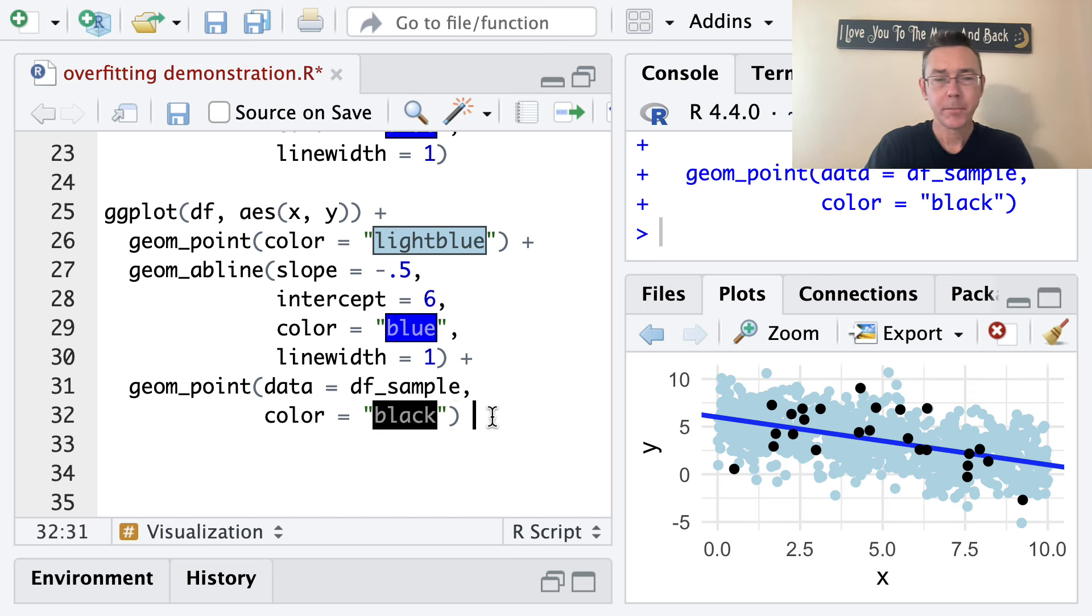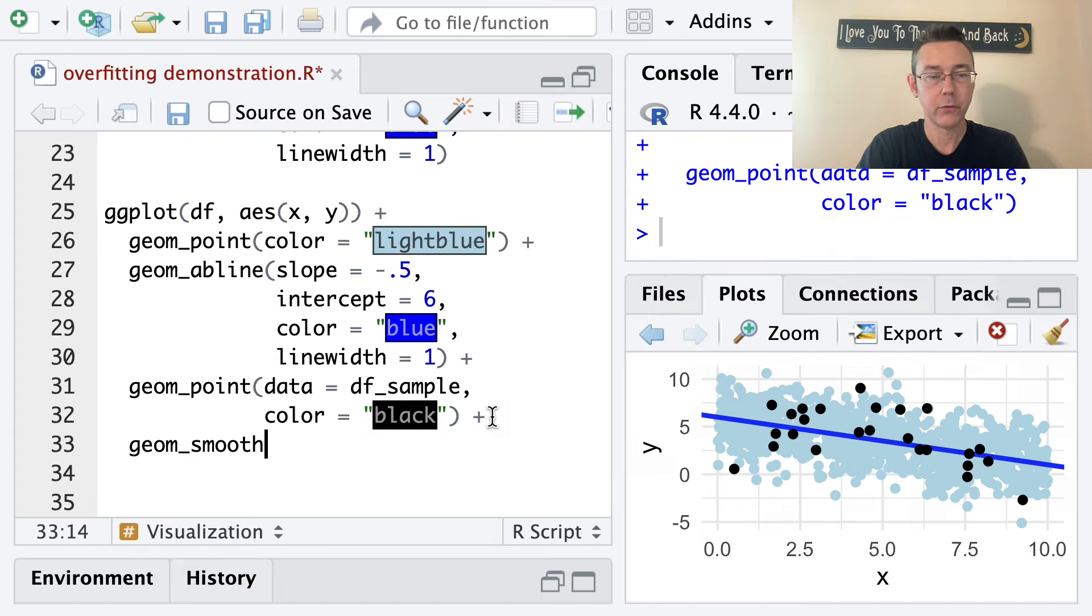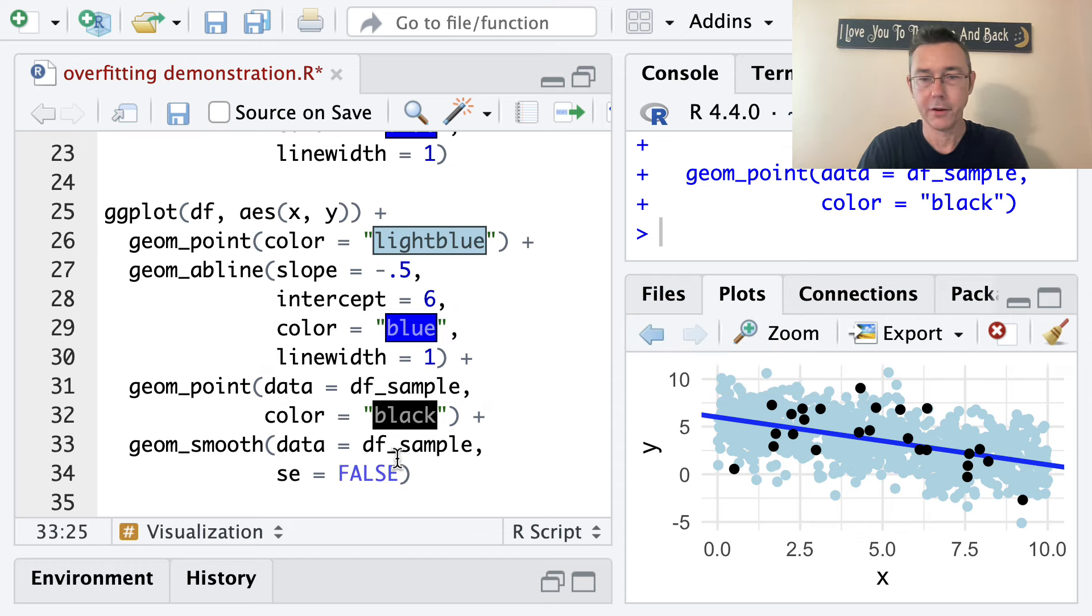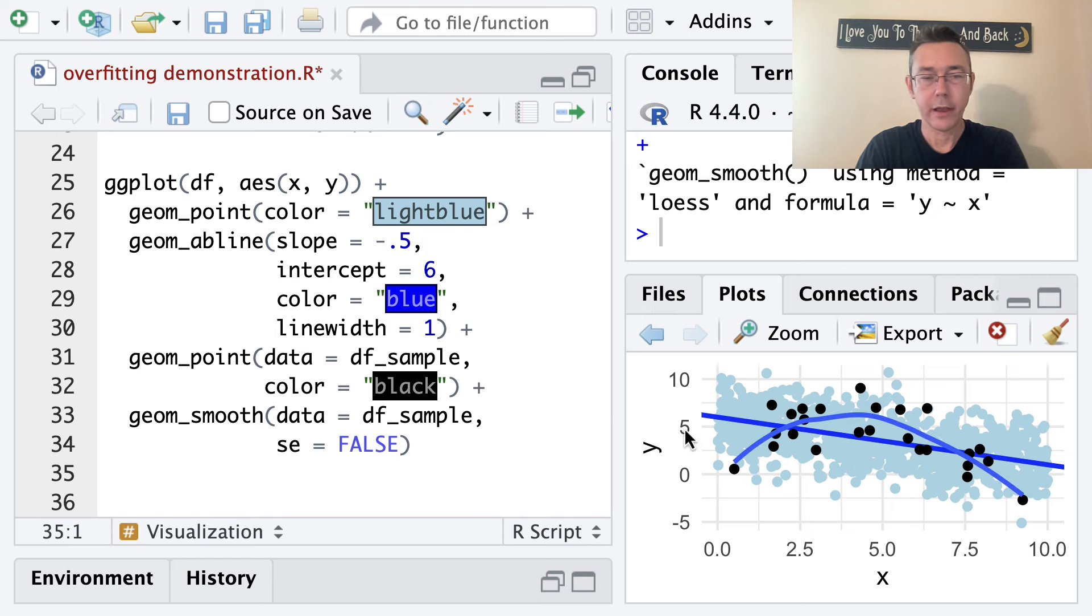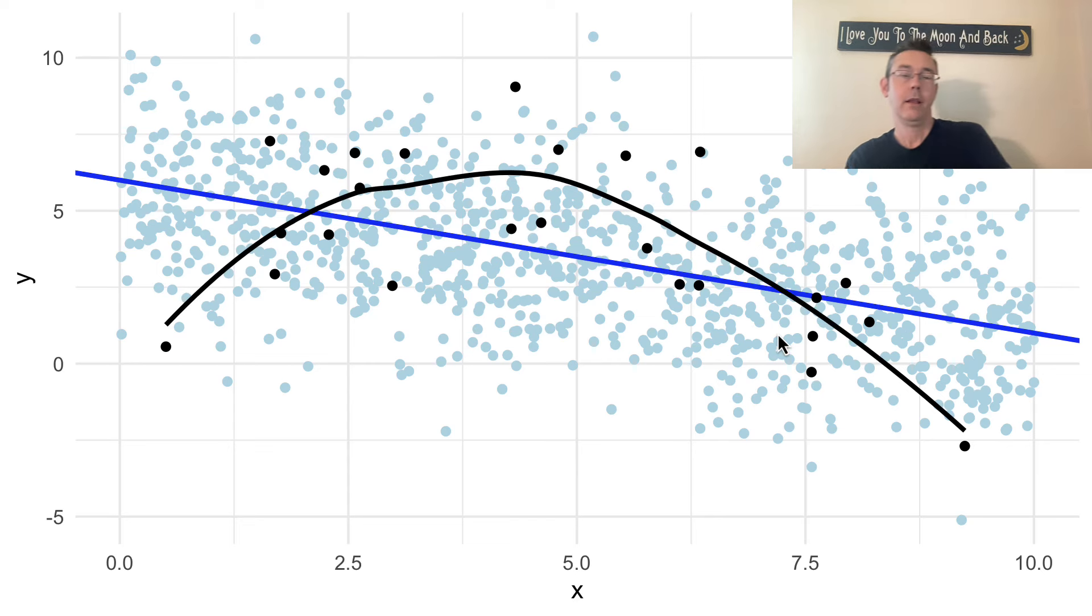So let's let R put a smoother on here, just on top of the black points. So geom_smooth. And I want data to be that df_sample again. And let's take out the standard error ribbon, just for clarity. I don't need everything cluttered up here. And I want color black on that. I want the color on my smoother to match up with the points that it's modeling. So zoom in on that a little bit.